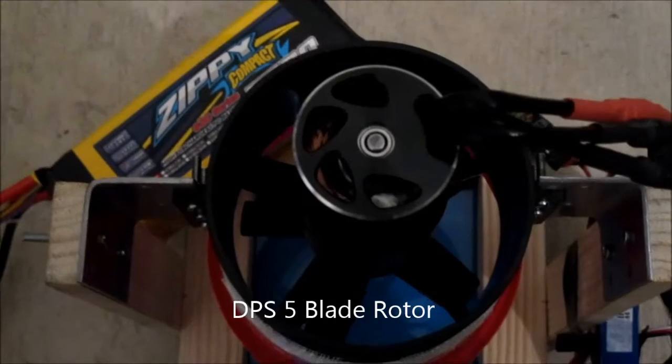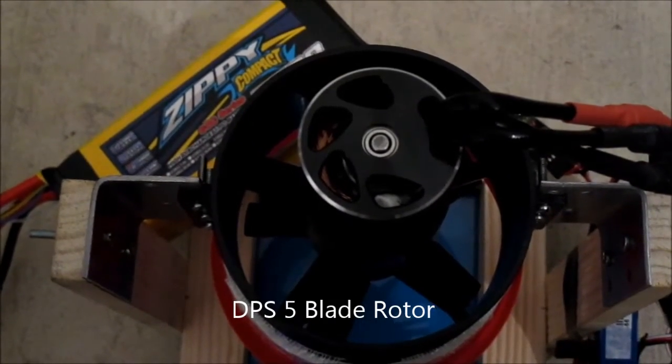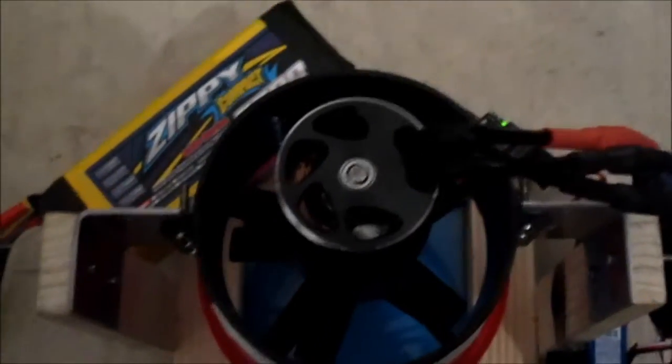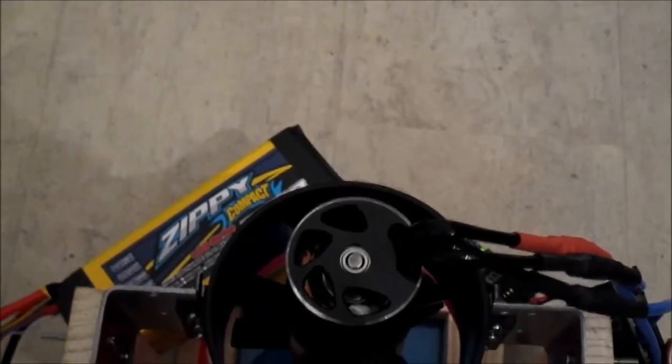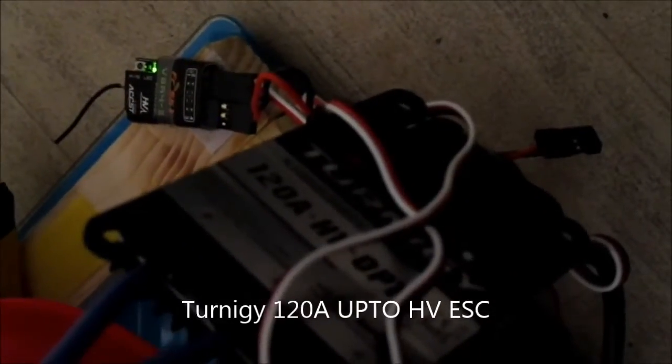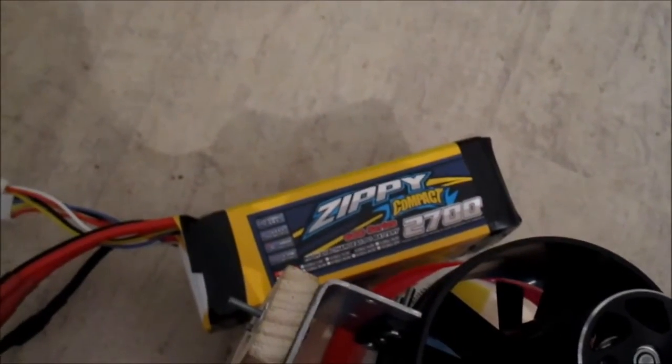This one though I happen to have a DBS five blade rotor and I fitted it with that, running it on eight cells. I've got a Turner G 120 amp high voltage speed controller.